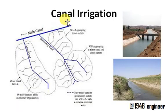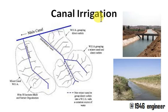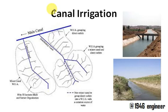First of all let's define these two terms: canal and irrigation. A canal is nothing but a human-made channel. Irrigation is nothing but supply of water to the crops or agricultural lands. Combining both, canal irrigation means supplying of water using canals.